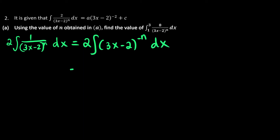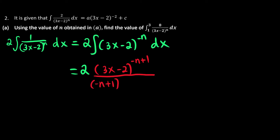Now we can start to integrate. We have 2 and the power increases by 1, so we get (3x minus 2) to the power of negative n plus 1, divided by the new power which is negative n plus 1. But since there is an expression inside the bracket, we also differentiate it — it becomes 3. Just remember: after integrating as usual with an expression inside, you differentiate whatever is inside and divide by that result. For this case it's just 3. Then we say plus c because it's an indefinite integral.